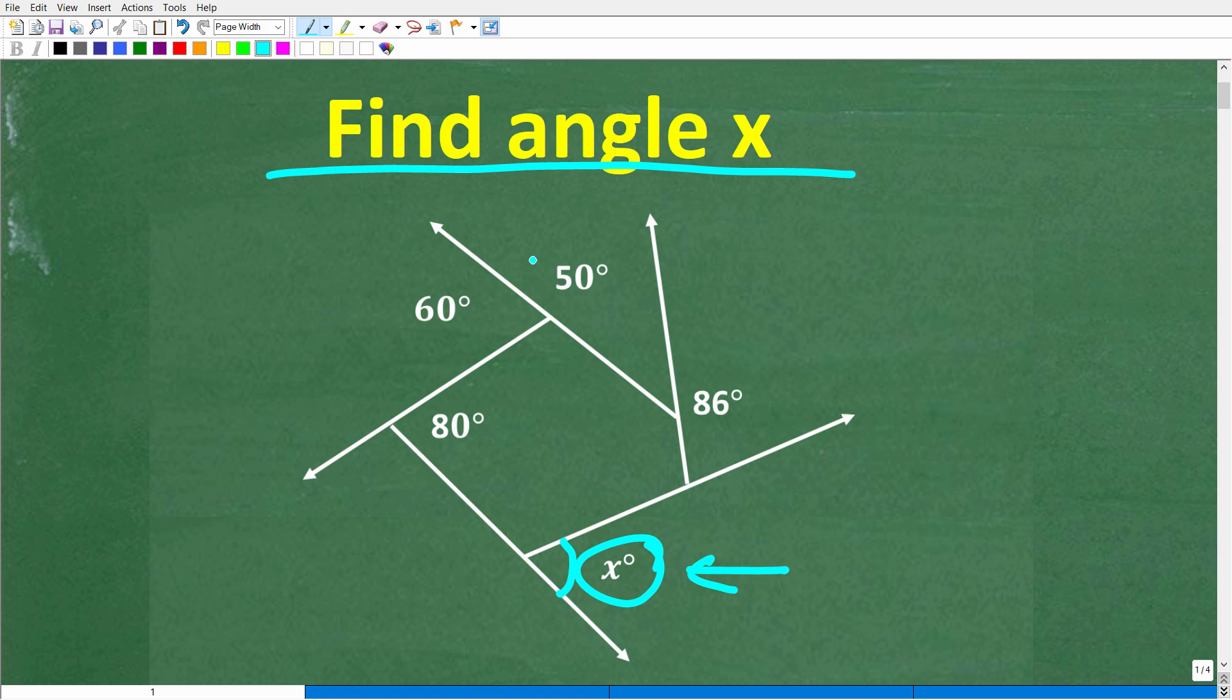That is the question, and of course we have this figure and multiple angles. So let's go through each angle one by one. This angle right here is 80 degrees. This angle is 60 degrees. This angle is 50 degrees. And this angle is 86 degrees.